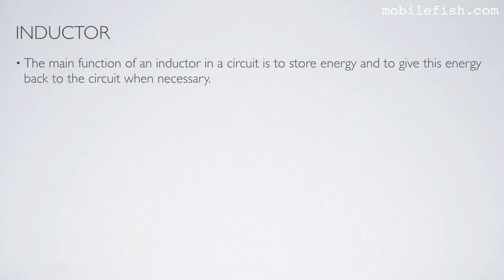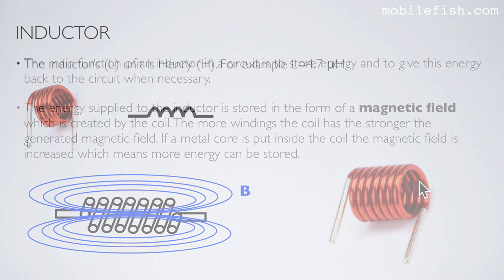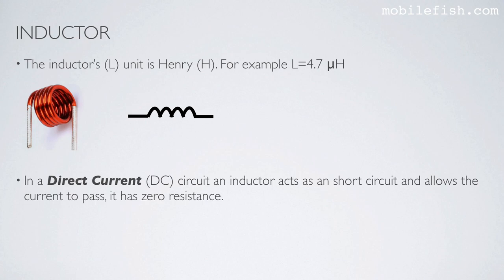The main function of an inductor in a circuit is to store energy and to give this energy back to the circuit when necessary. The energy is stored in the form of a magnetic field created by the coil. The more windings the coil has, the stronger the generated magnetic field. If you put a metal core inside the coil, the magnetic field is increased, meaning more energy can be stored. The inductor's unit is henry, for example 4.7 microhenry. In a direct current circuit an inductor acts as a short circuit and allows current to pass — it has zero resistance.